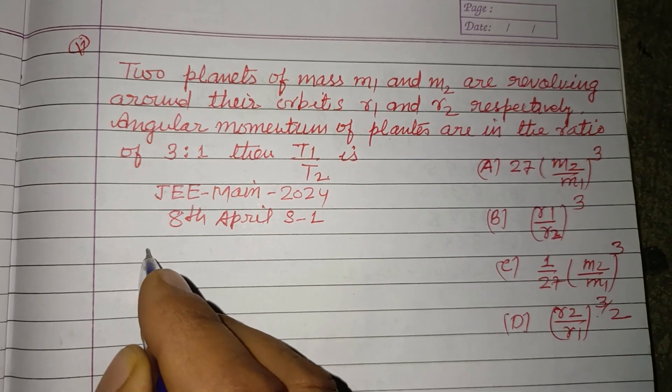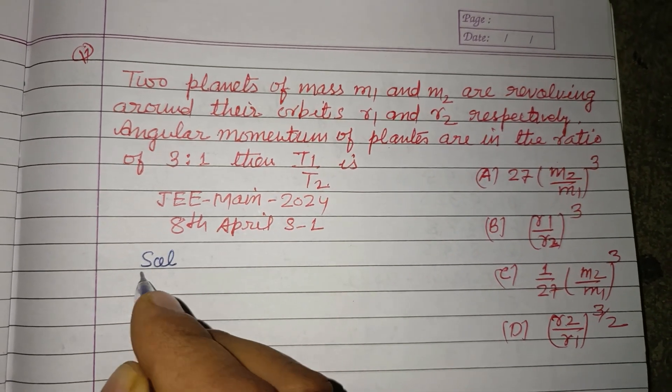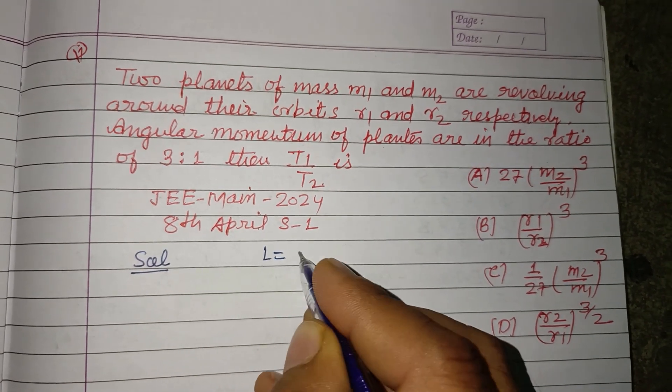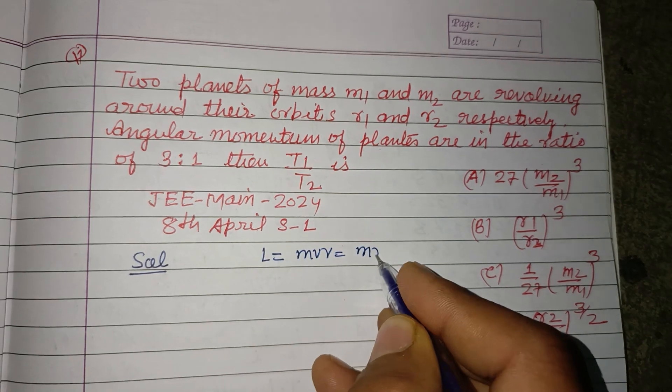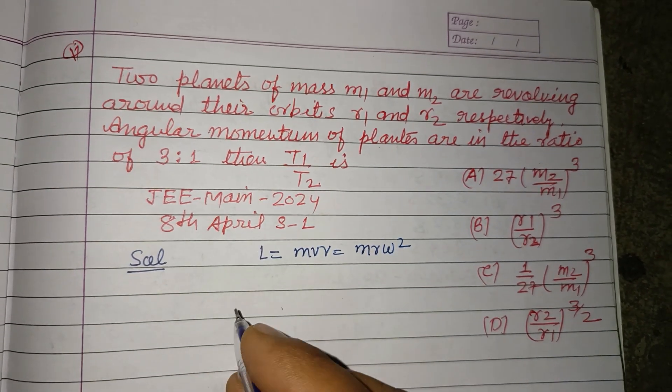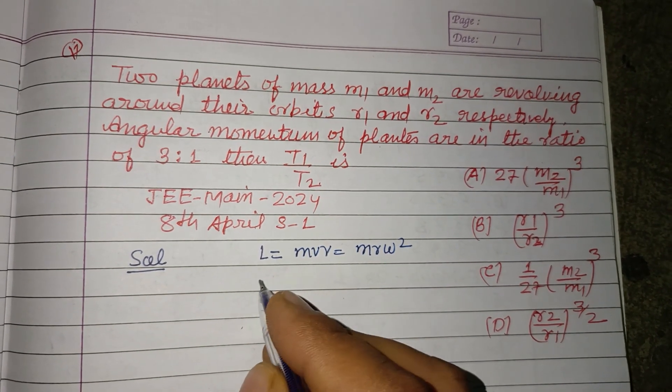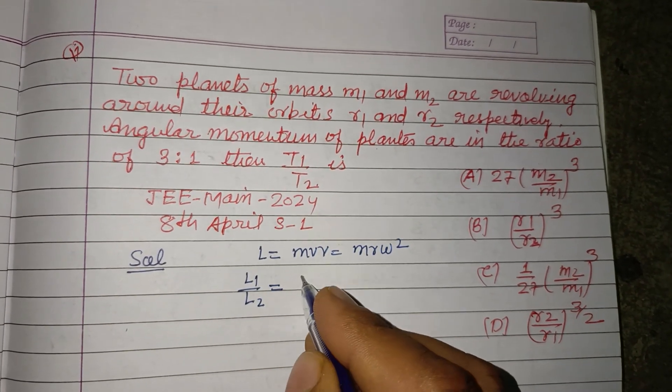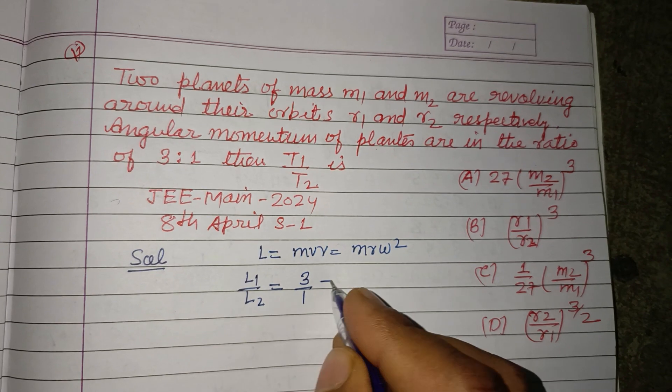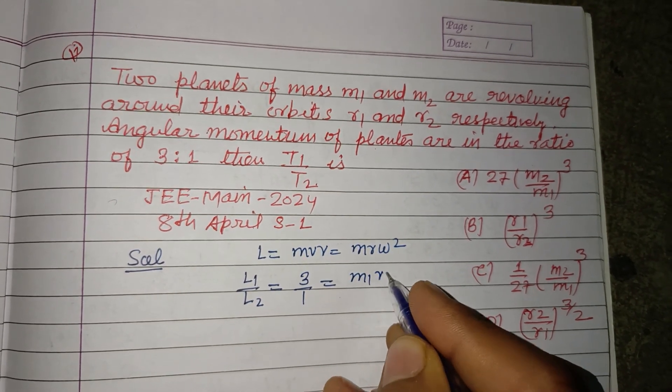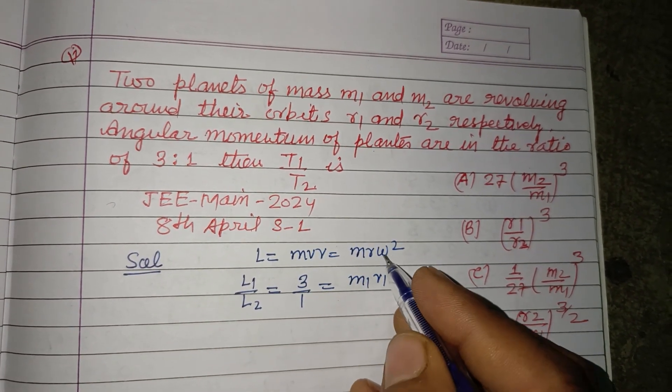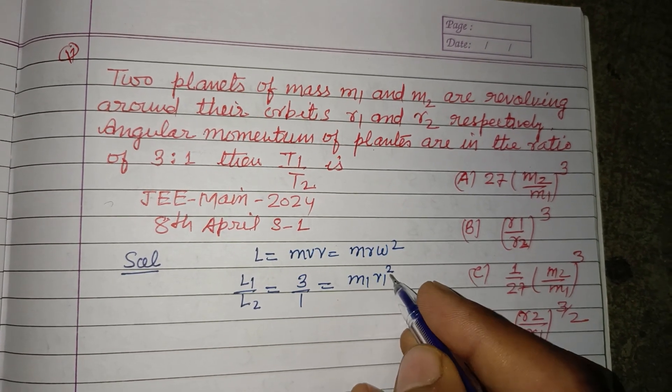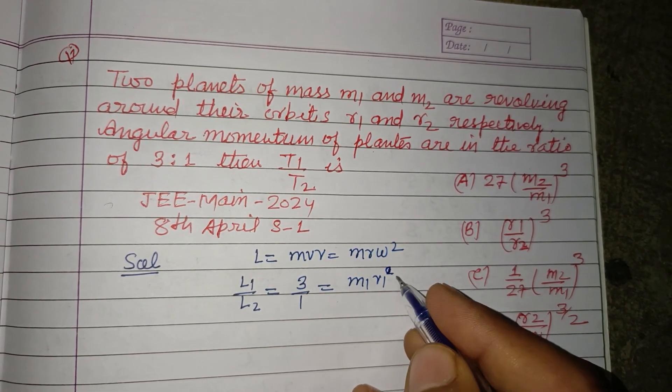So students, here time of revolution was asked. And you know that L equal to MVR or MRω². So L1 upon L2, angular momentum is given 3 ratio 1, that is M1R1²ω1.